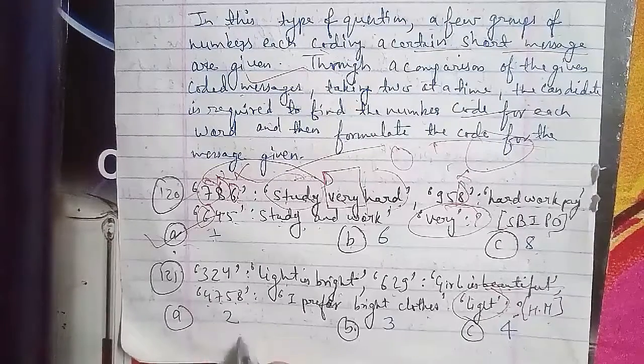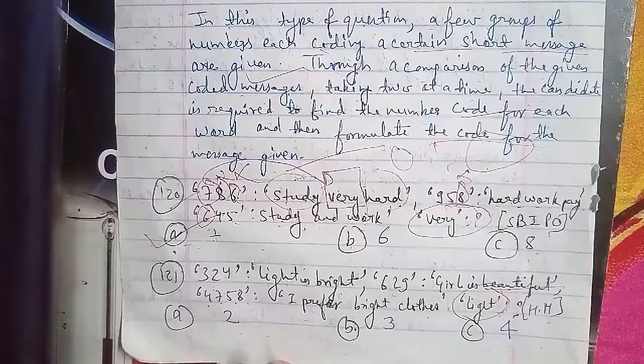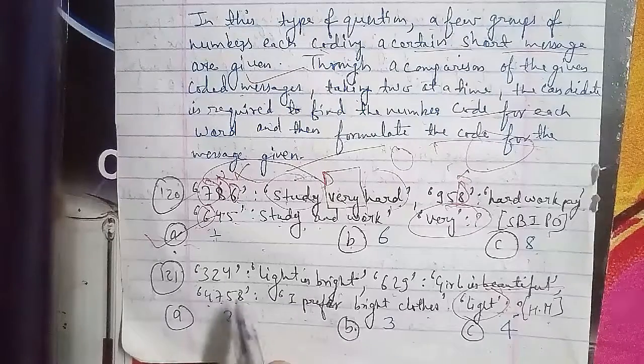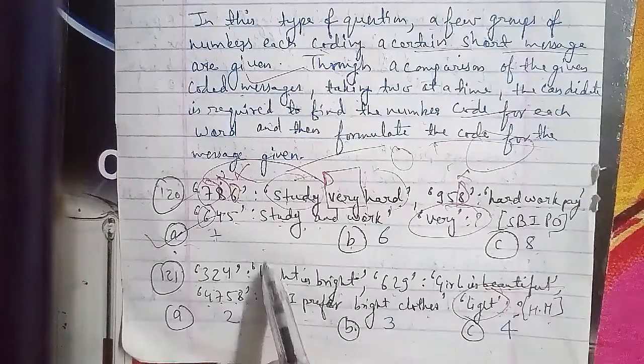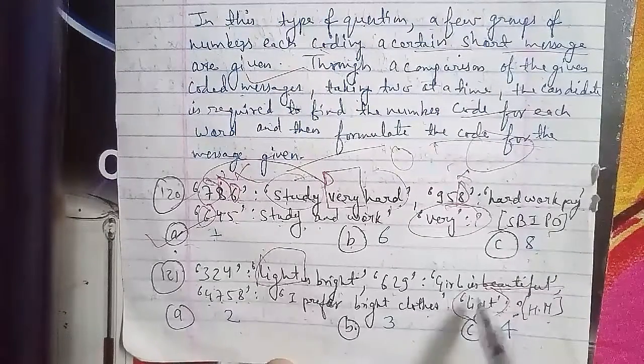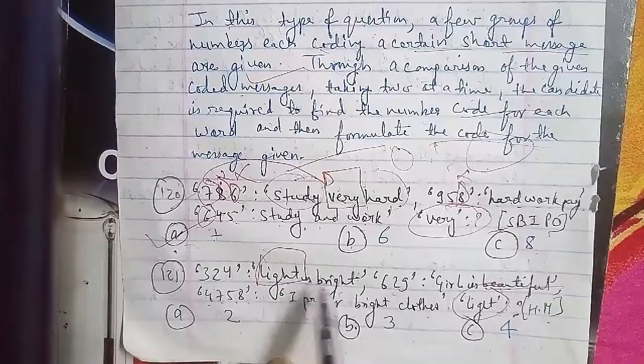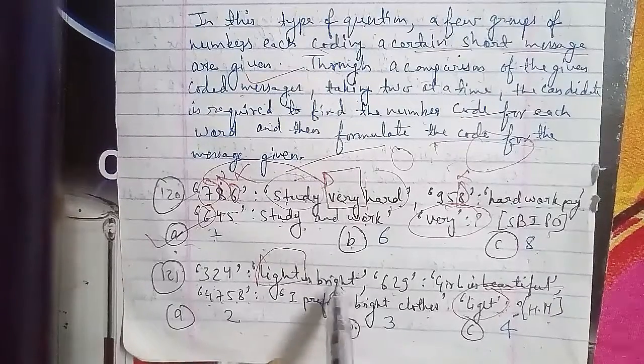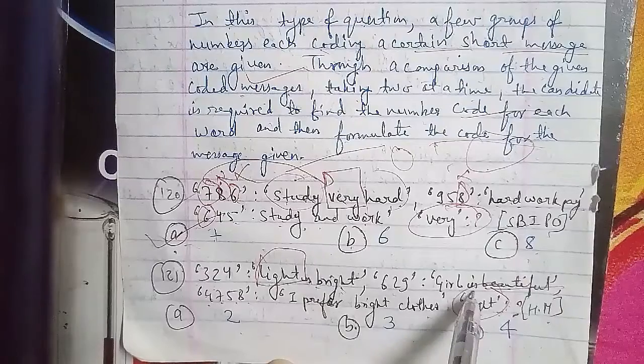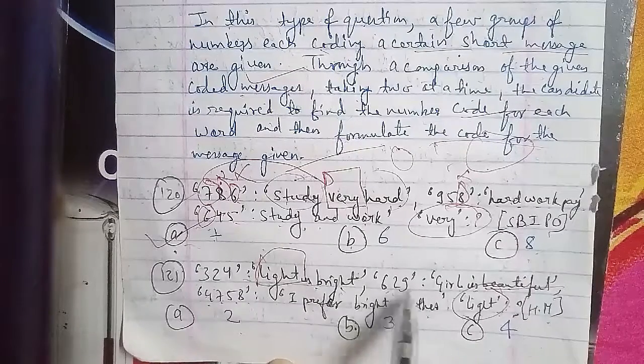In 629 and 324, 2 is coded, so we don't want 2. Then for bright: I prefer bright clothes is 4758. 4 is common.